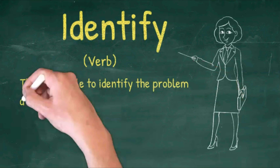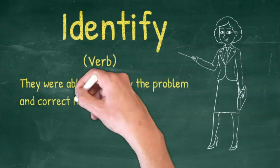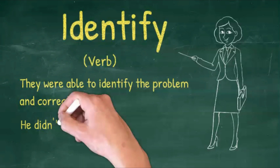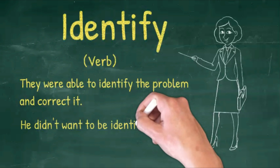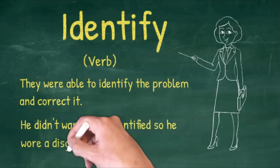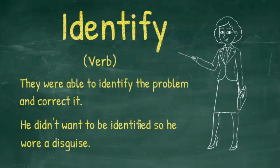They were able to identify the problem and correct it. This means that they were able to recognize the problem. He didn't want to be identified so he wore a disguise — he didn't want to be recognized.